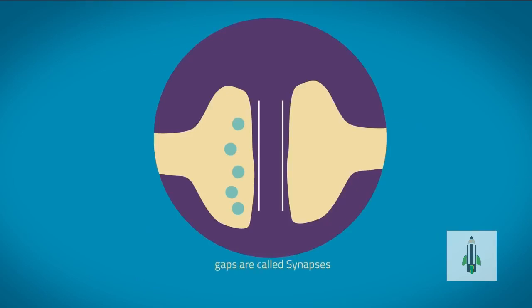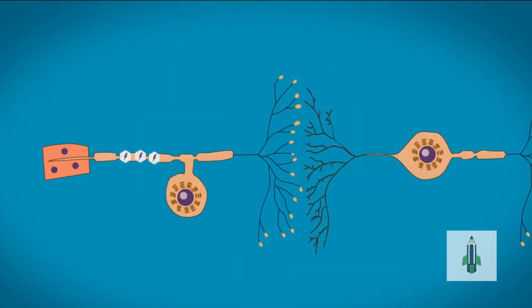So let's have a look at how synapses work. Synapses are junctions between two adjacent neurons, and the electrical impulse has to cross the junction to carry on its journey. The electrical impulse arrives along an axon, which triggers the release of a chemical neurotransmitter. This diffuses across the synapse and binds with receptors on the membrane of the next neuron.